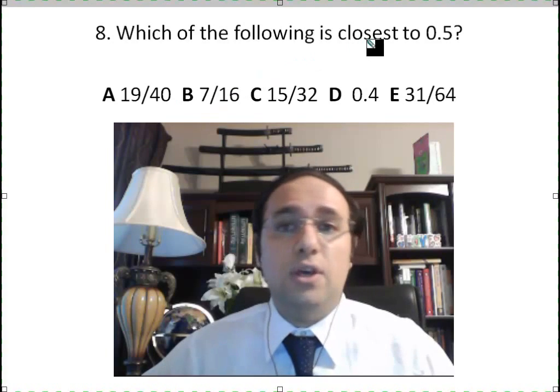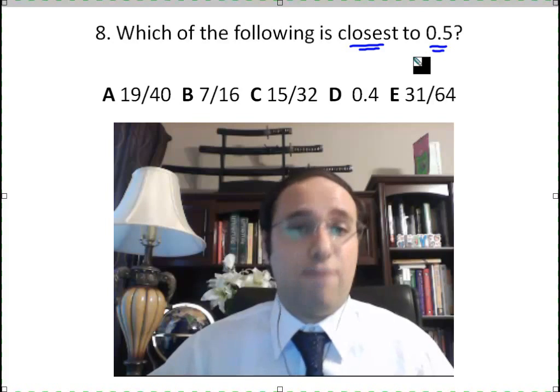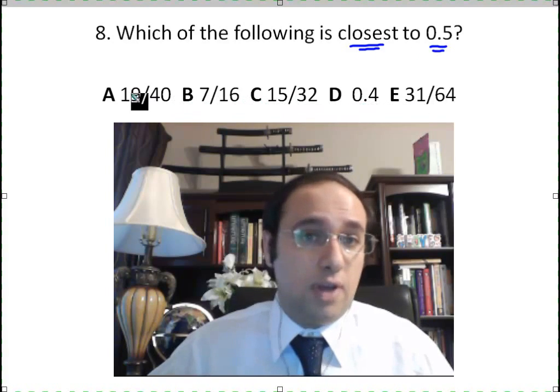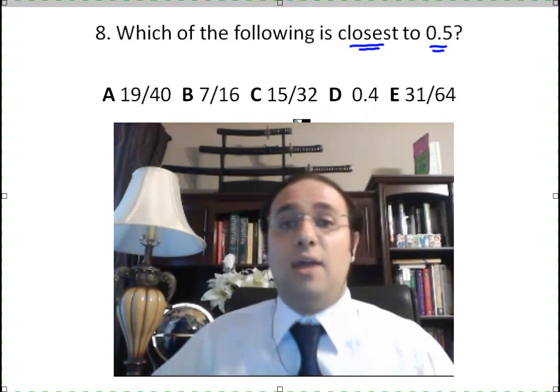Which of the following is closest to 0.5, to half? I have four fractions and one decimal: 19 over 40, 7 over 16, 15 over 32, 0.4, and 31 over 64.